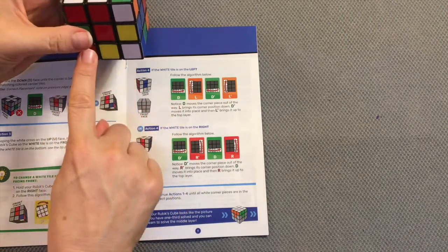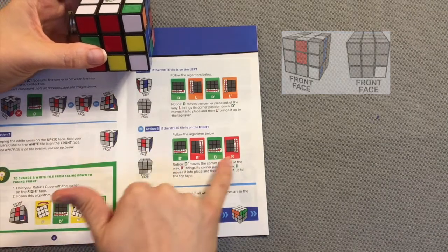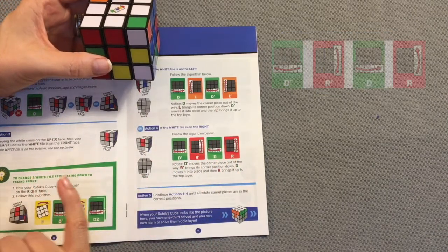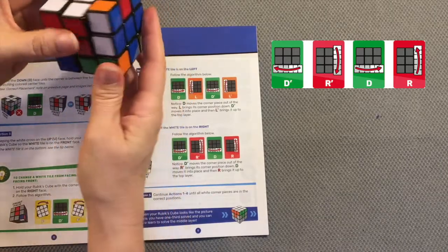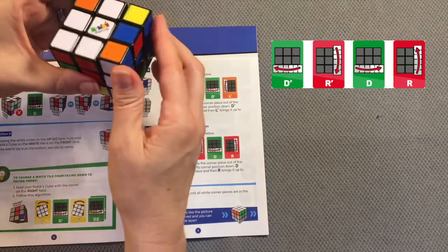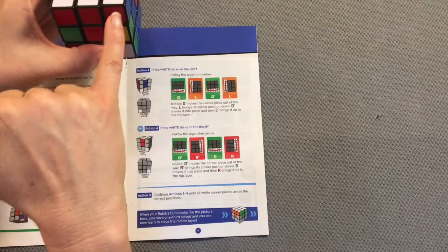My white tile is on the right again, so I will run this algorithm: down to the left, right towards me, down away, and right away. Here my corner pieces match red to red and blue to blue.